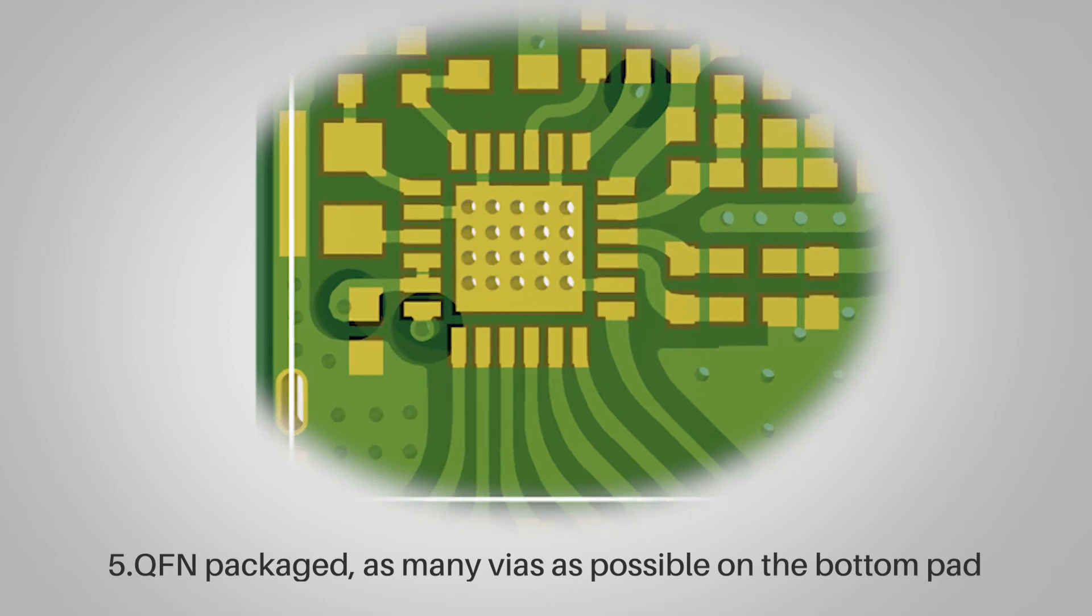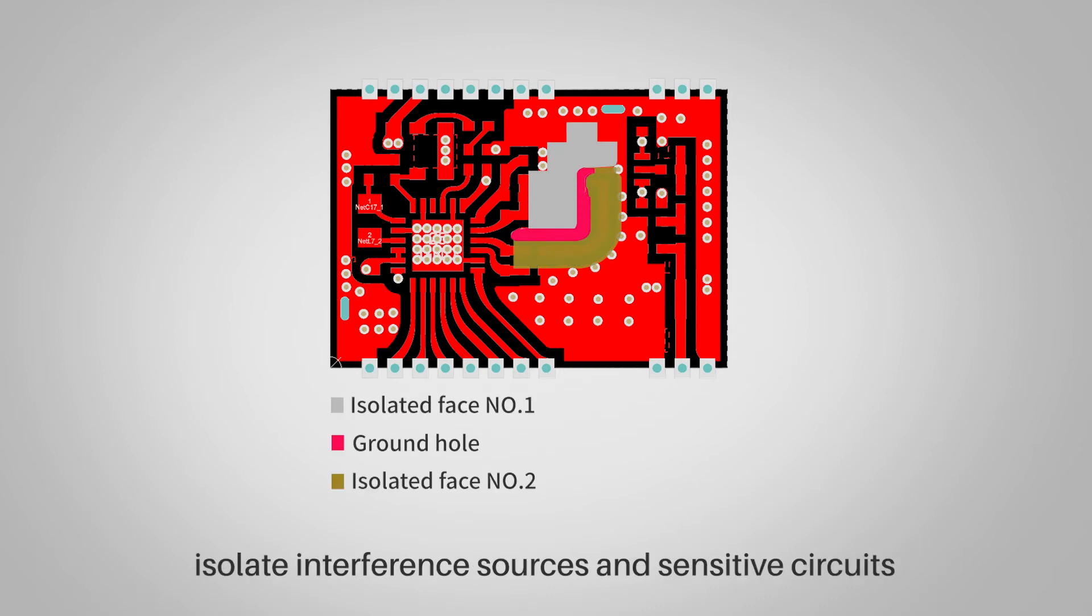Rule five: for QFN packaged devices, use as many vias as possible on the bottom pad. Rule six: ground holes can be used to isolate interference sources and sensitive circuits.